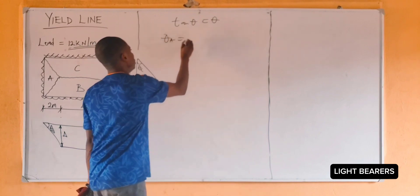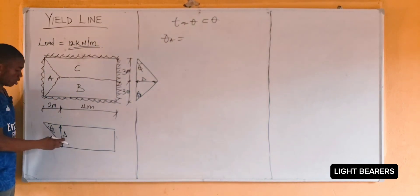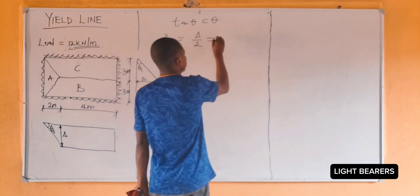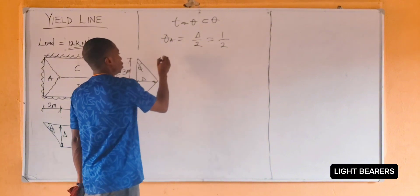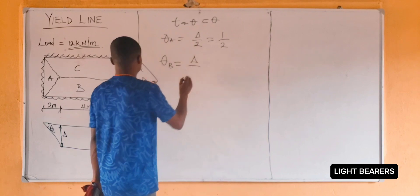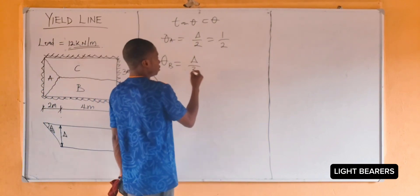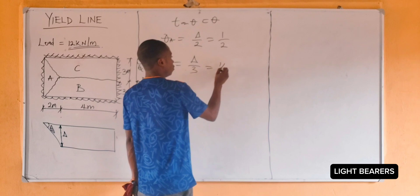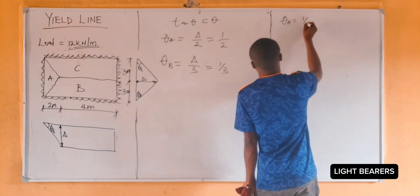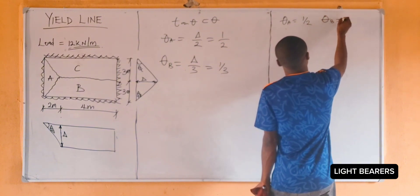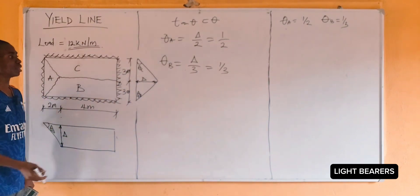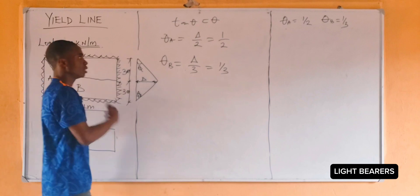So theta A is delta over 2. Delta is 1, so we have 1 over 2. Then theta B equals delta over 3. Delta remains 1, so we have 1 over 3. Since panel B and panel C are symmetrical, theta B equals theta C.